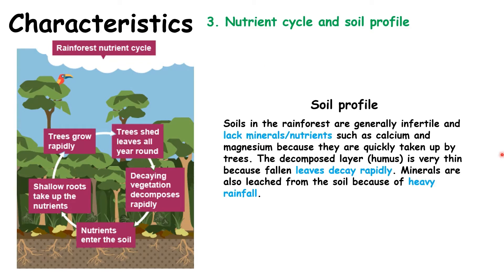In terms of soil, soils in rainforests are generally very bad — very infertile. They lack minerals and nutrients because they're quickly taken up by the trees through their roots. The layer of soil is very thin because the fallen leaves decay so rapidly. In England, you'd have a huge pile of leaves forming before any rot away, but in rainforests they rot really, really quickly.